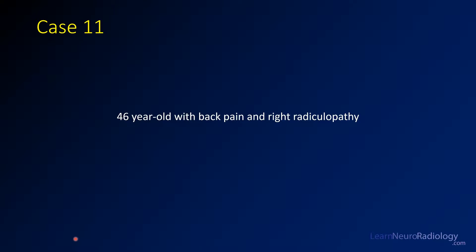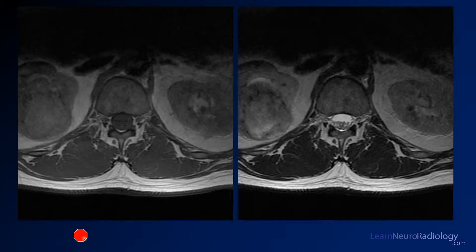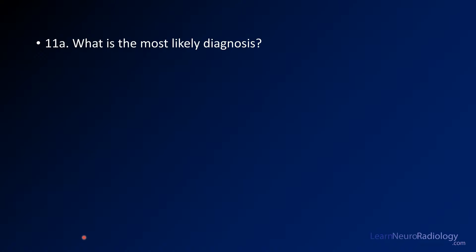For case 11, we have a 46-year-old with back pain and right-sided radiculopathy. Here we have a couple of images from an MRI. This is the last set of images here. Remember the patient has right-sided back pain. Your first question: what is the most likely diagnosis?